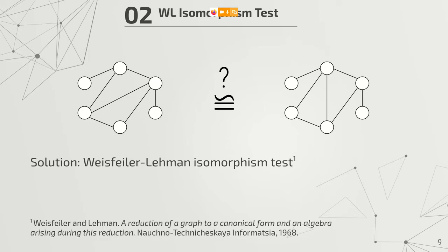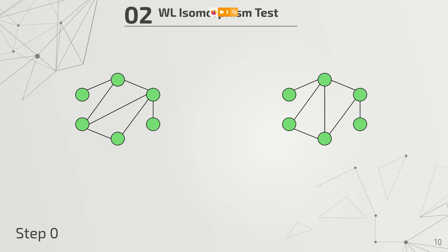This is an old algorithm from 1968 but it is still the holy grail of graph models. The algorithm works as follows to determine if two graphs have identical structure: we start by coloring the nodes — you can use colors, alphabets, or symbols, you need basically an alphabet of symbols. It is called the color refinement algorithm. The algorithm starts by assigning every node in both graphs the very same color.